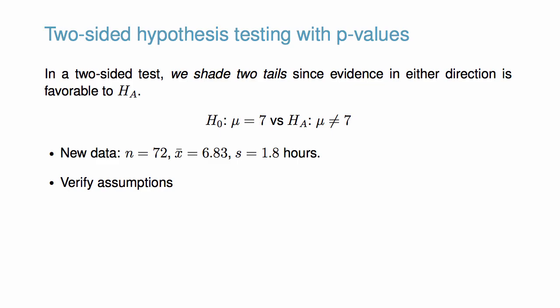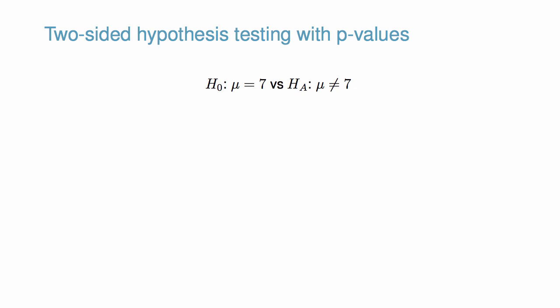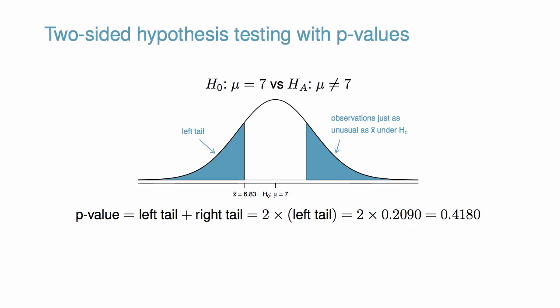First, verify assumptions and then proceed with the p-value calculation. Here, the alternative hypothesis is two-sided, so both tails must be shaded for the p-value. The p-value can be calculated as a left tail plus the right tail, or as two times the area in a single tail, which yields a p-value of 0.4180.